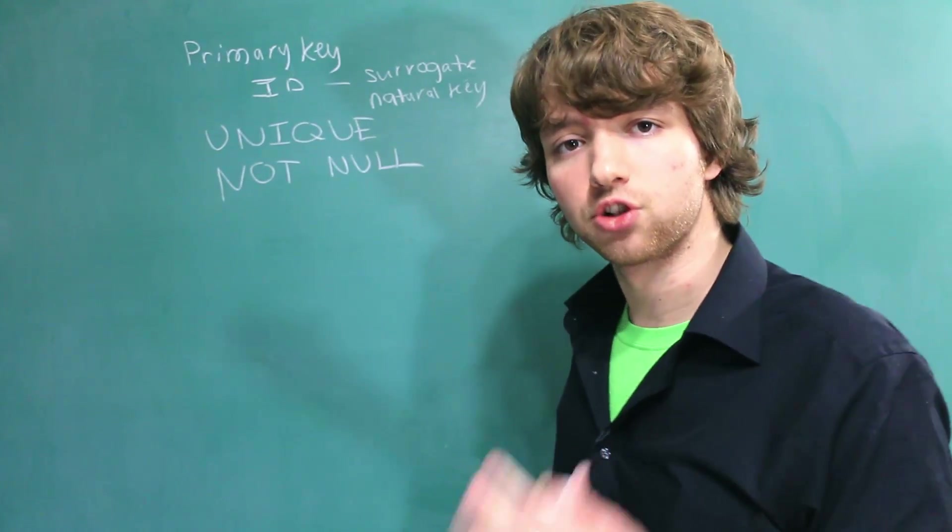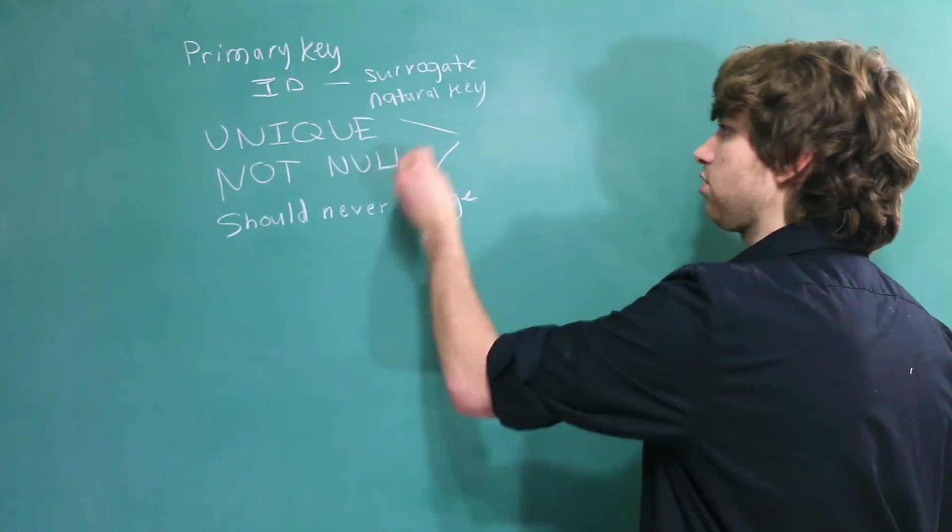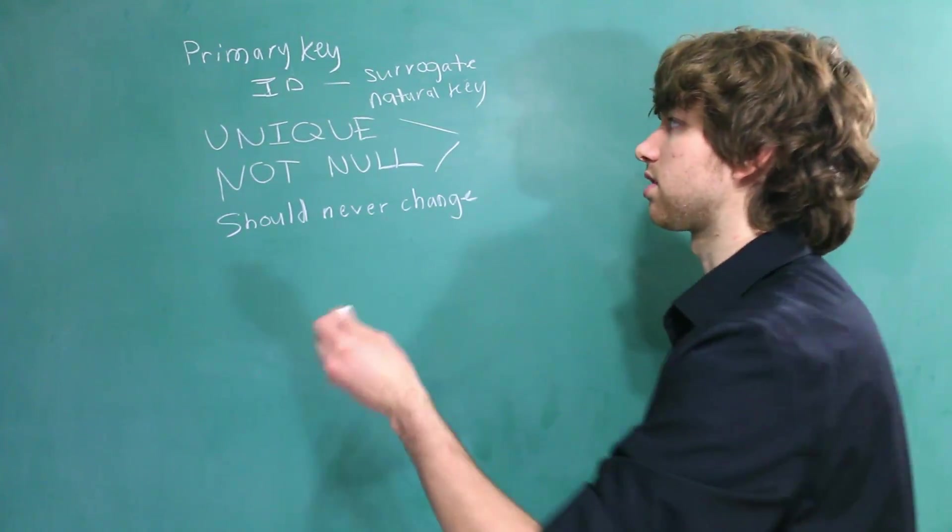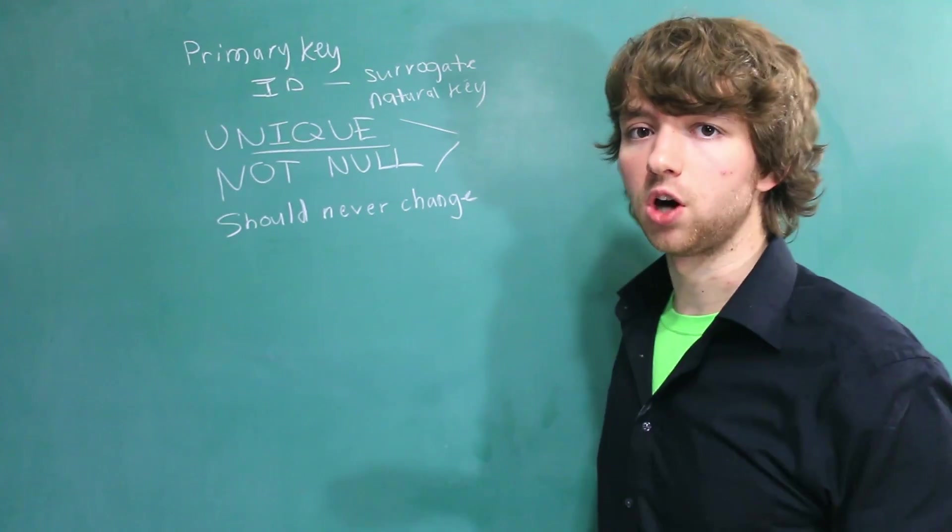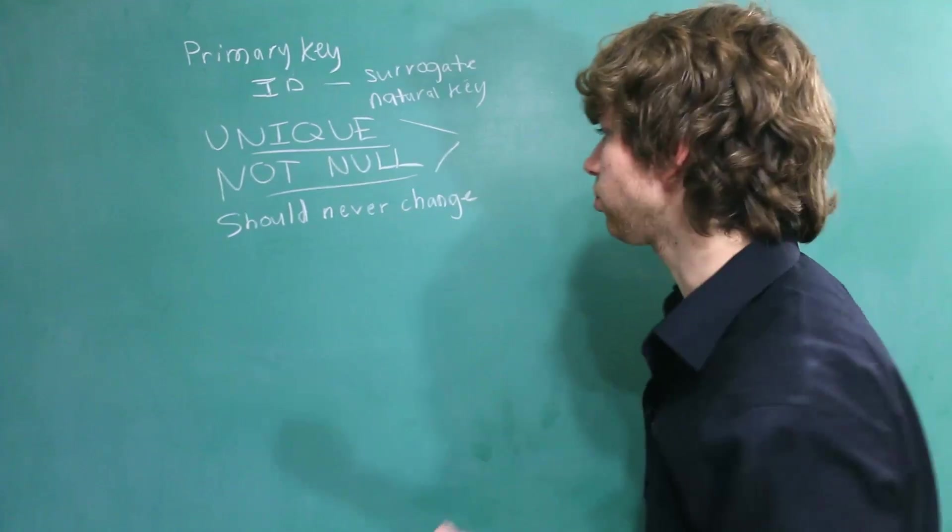Finally, the data should never change. Now these two are pretty easy to enforce with MySQL because these are constraints. You can literally just say unique right after the column definition when we're creating a table. Same with not null. Unfortunately, the whole concept of the thing never changing is not quite as easy.